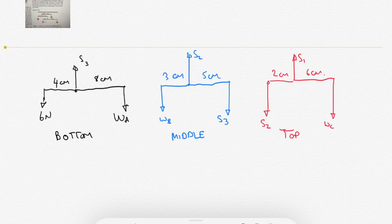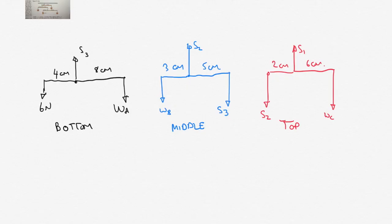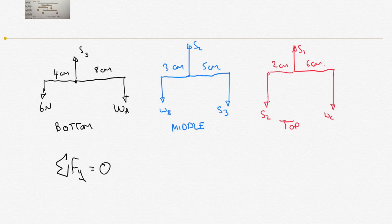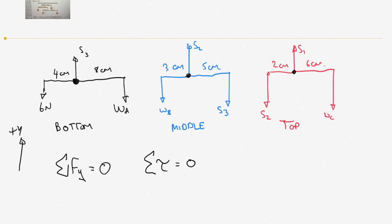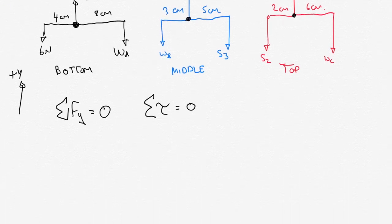Now we apply the conditions for equilibrium to each rod individually. The sum of forces in the y direction equals zero, and the sum of torques equals zero. If you approach this problem from the bottom up, you'll find that's the only way to solve it — that way you have only one unknown each time, and that allows you to work through efficiently.